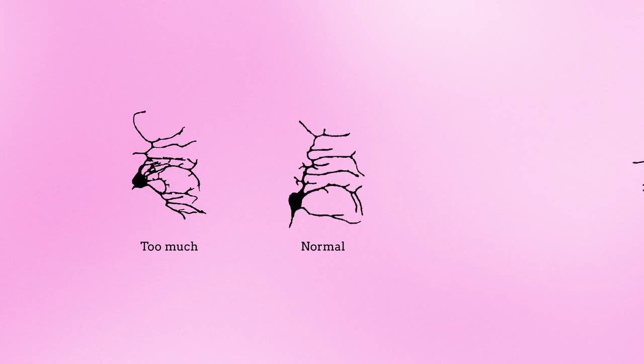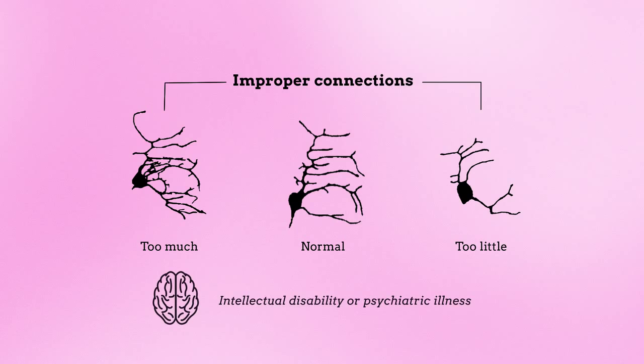However, too much or too little dendritic branching can produce improper neuronal connections, resulting in neuronal dysfunction that can lead to intellectual disability or psychiatric illness.